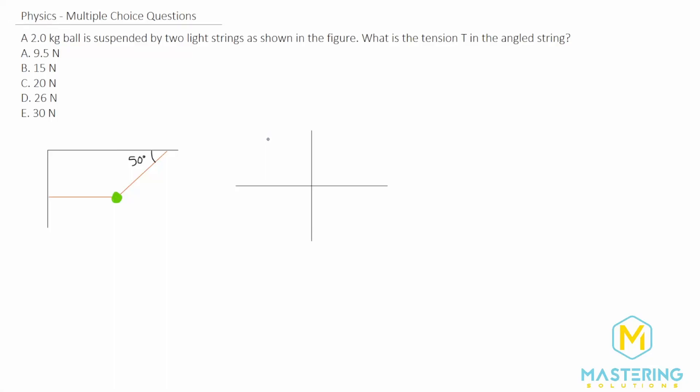Welcome to Mastering Solutions. This is a multiple choice question with a 2-kilogram ball suspended by two light strings. We need to find the tension in the angled string.